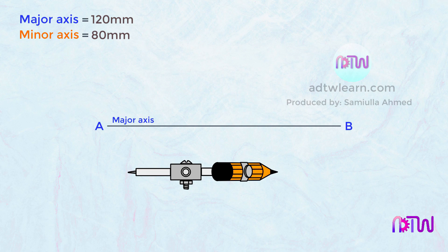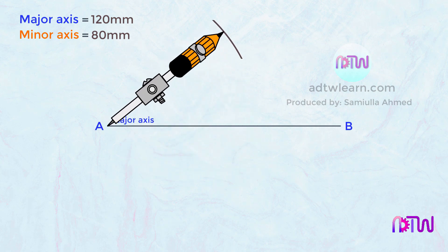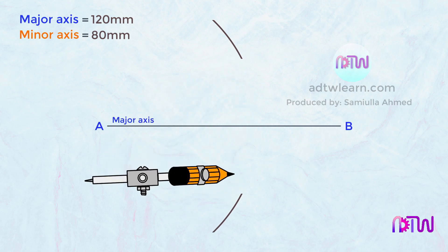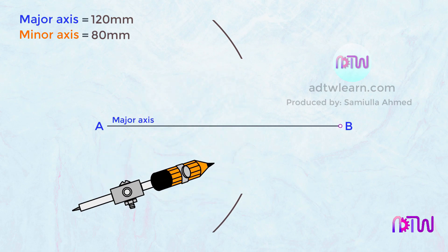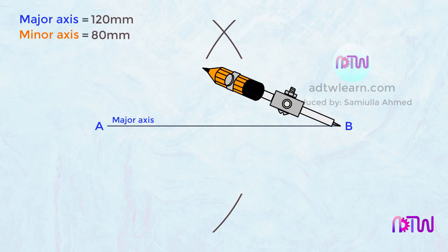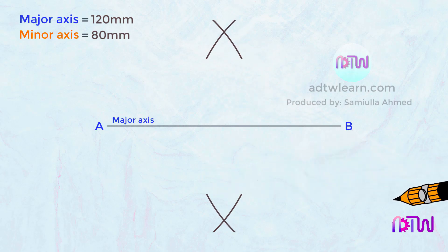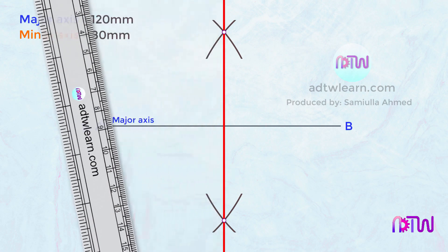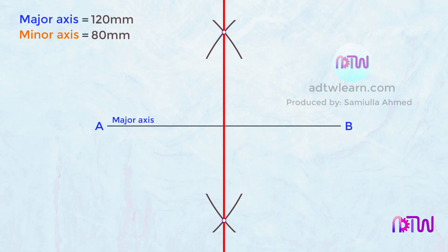Keep the compass at point A and cut arcs on both sides. Similarly, keep the compass at point B and cut arcs on both sides of this line. Draw a line passing through these points — this line will be exactly in the middle of the major axis.